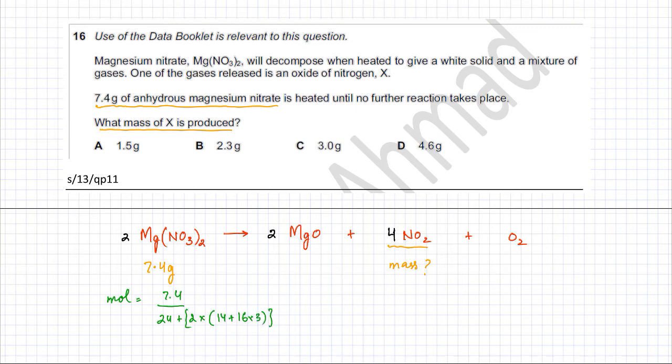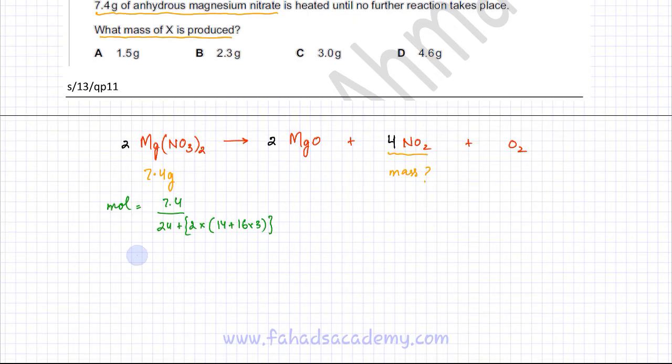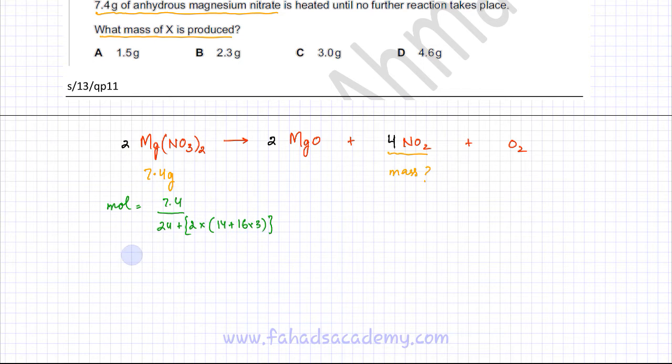Mass divided by MR is going to give us moles. Using my calculator, it's going to be 7.4 divided by 24 plus this, and I'm getting 0.05 moles. So the moles of magnesium nitrate are 0.05 moles. We've calculated this using mass over MR.